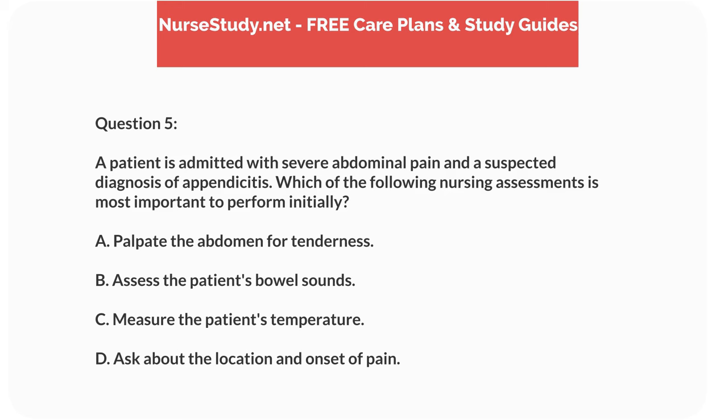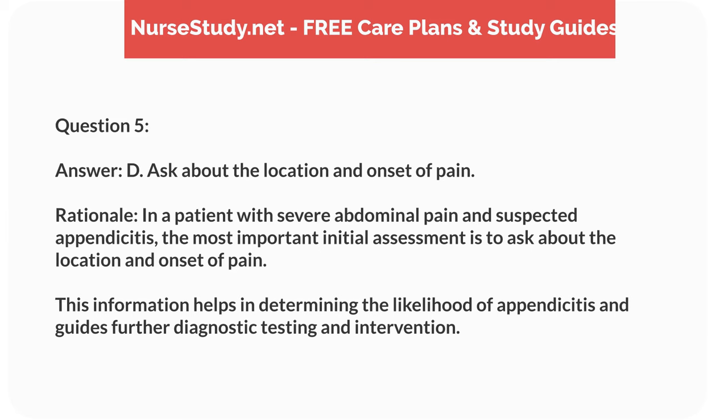Question 5. A patient is admitted with severe abdominal pain and a suspected diagnosis of appendicitis. Which of the following nursing assessments is most important to perform initially? A. Palpate the abdomen for tenderness. B. Assess the patient's bowel sounds. C. Measure the patient's temperature. D. Ask about the location and onset of pain. Answer: D. Ask about the location and onset of pain. Rationale: In a patient with severe abdominal pain and suspected appendicitis, the most important initial assessment is to ask about the location and onset of pain. This information helps in determining the likelihood of appendicitis and guides further diagnostic testing and intervention.